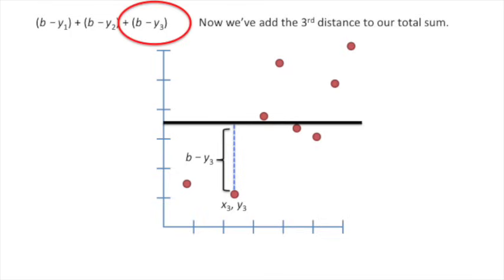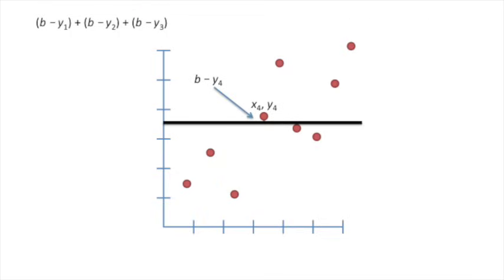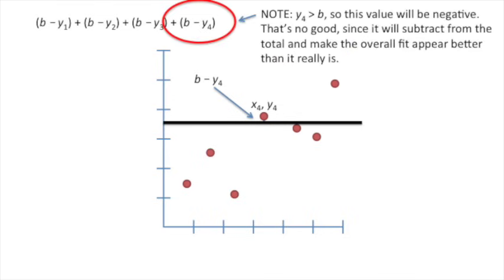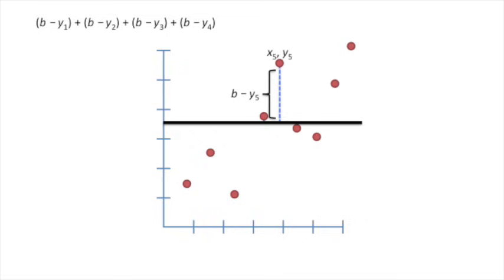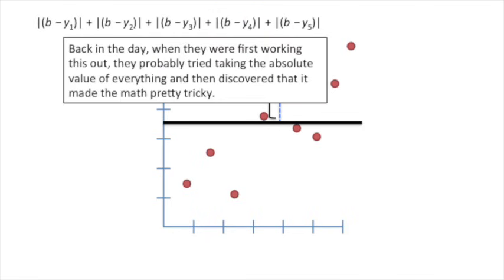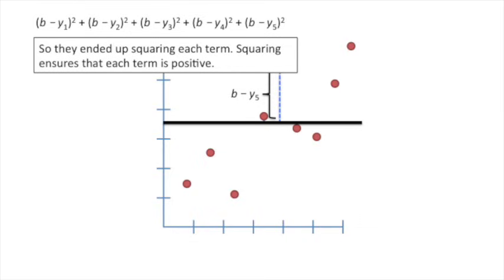The distance for the fourth point is b minus y4. Note, y4 is greater than b because it's above the horizontal line, so this value will be negative. That's no good, since it will subtract from the total and make the overall fit appear better than it really is. The fifth data point is even higher relative to the horizontal line. This distance is going to be very negative. Back in the day, when they were first working this out, they probably tried taking the absolute value of everything and then discovered that it made the math pretty tricky. So they ended up squaring each term. Squaring ensures that each term is positive.